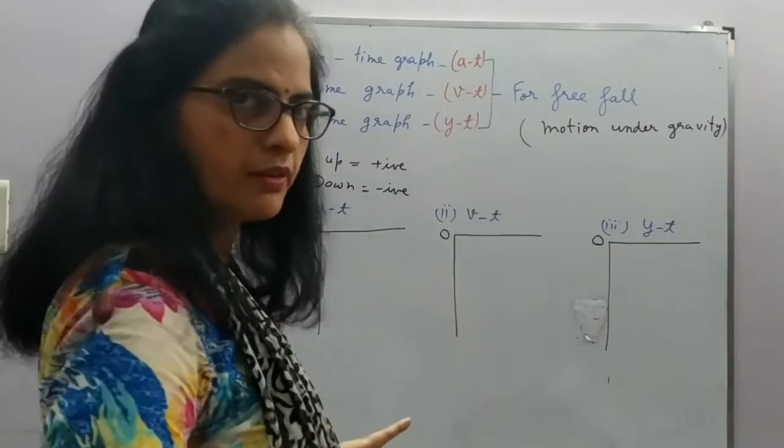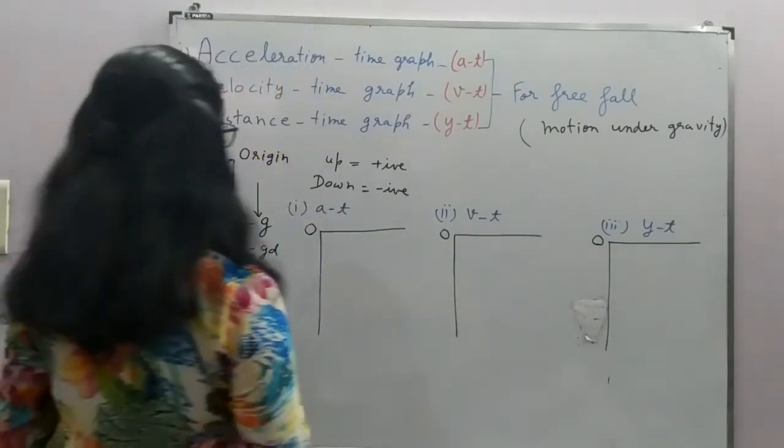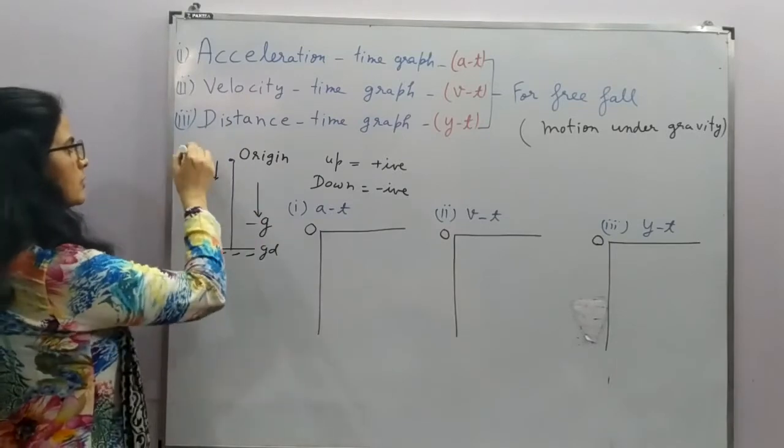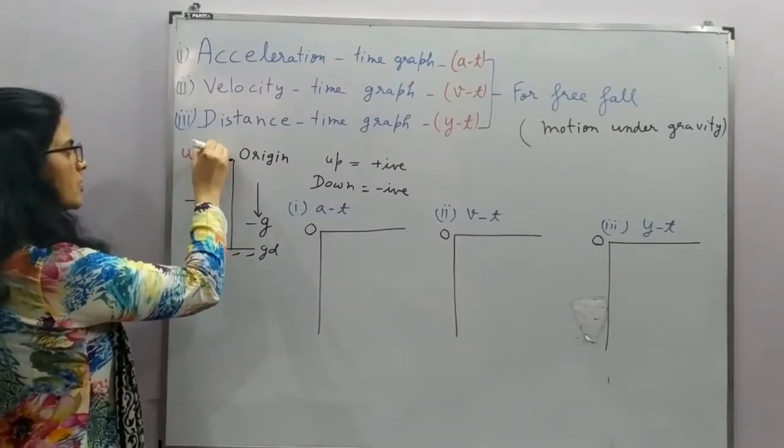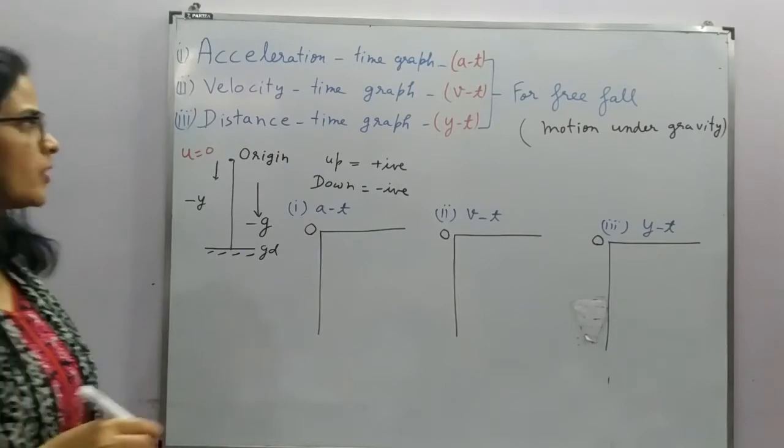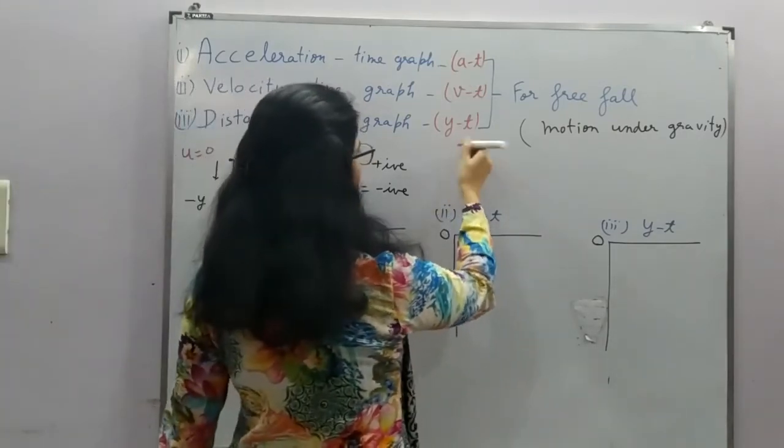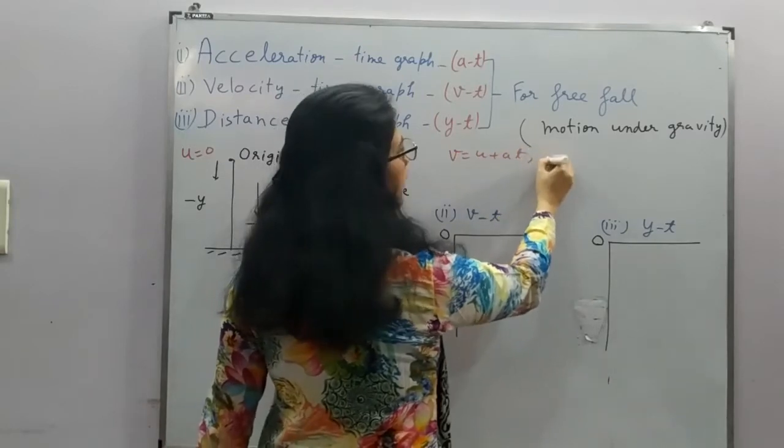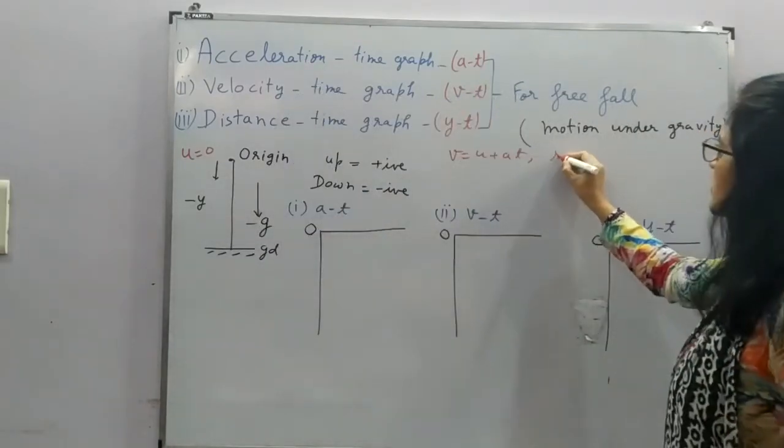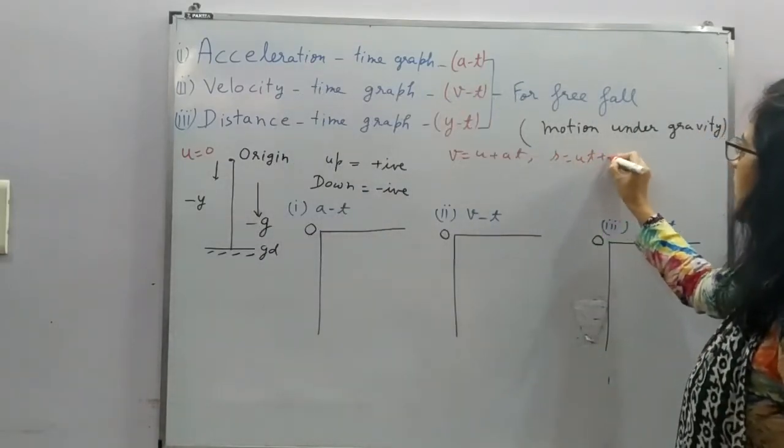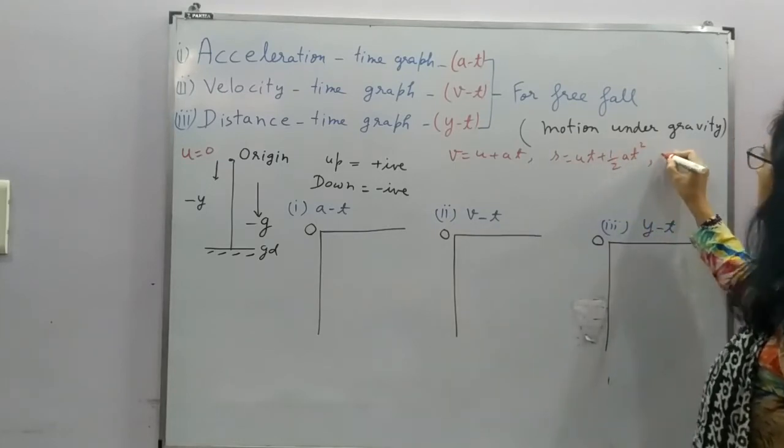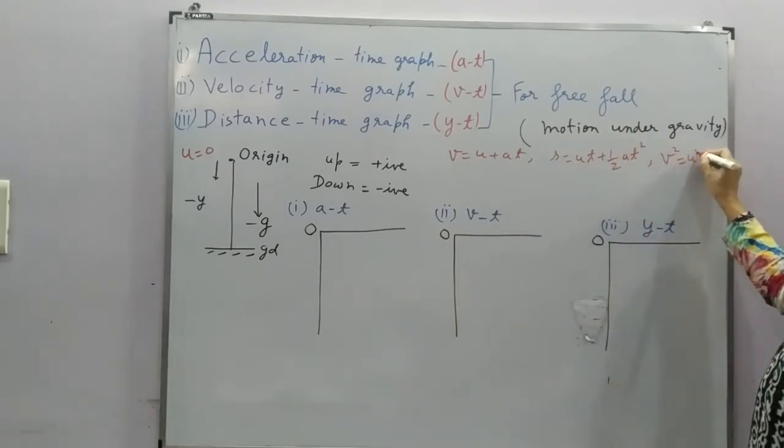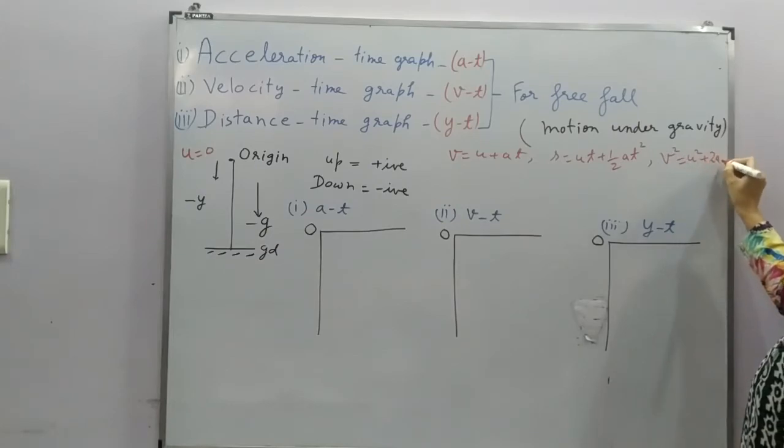For this, we must know the equations of motion. Now this object is dropped from here, so the initial velocity will be 0. So if we look at the equations, we know the standard equations: V is equal to U plus AT, distance is equal to UT plus half AT square, and V square is equal to U square plus 2AS.